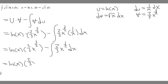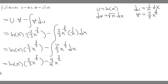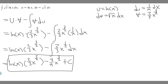Rewriting, we have 2/3 · x^(3/2) minus the antiderivative of 2/3 · x^(1/2). To take the antiderivative, we add 1 to the exponent, getting x^(3/2), then divide by 3/2. So 2/3 divided by 3/2 gives us 4/9, making it 4/9 · x^(3/2). The final answer is ln(x) · (2/3)x^(3/2) minus (4/9)x^(3/2) plus C.